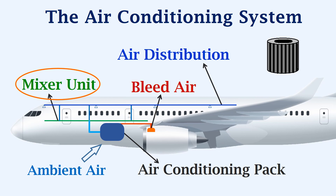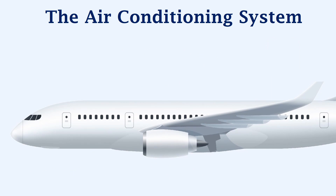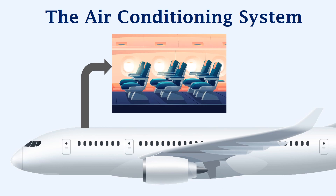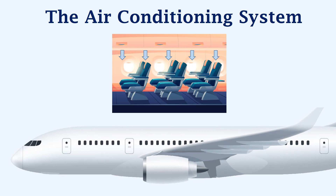This is where the HEPA filter comes in. To understand this, let's look at how the air gets mixed and distributed inside the aircraft. Let's consider the aircraft's cabin. The conditioned air is distributed via vents provided at the top, as shown here. This air maintains a comfortable temperature inside the aircraft. The air already present in the cabin is sucked out by vents located on the cabin floor.